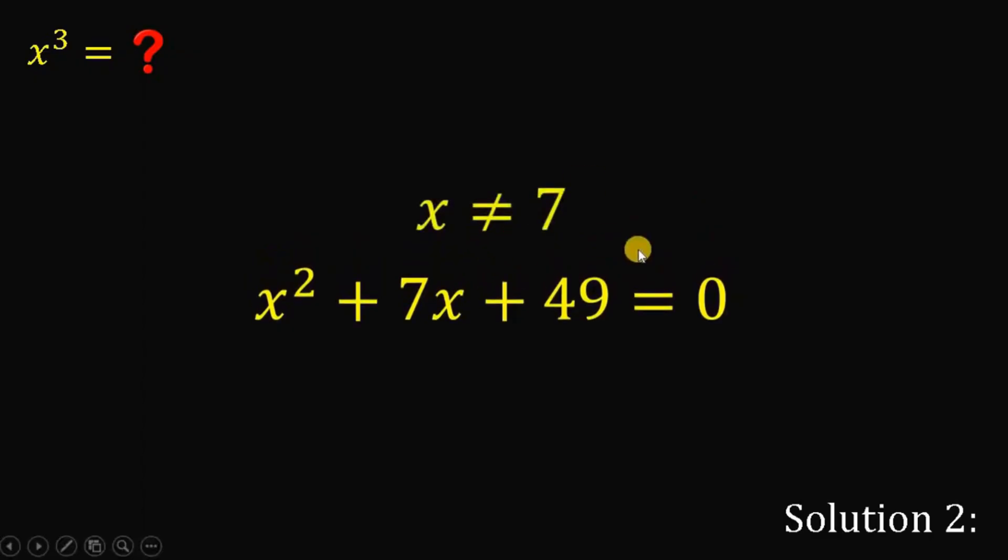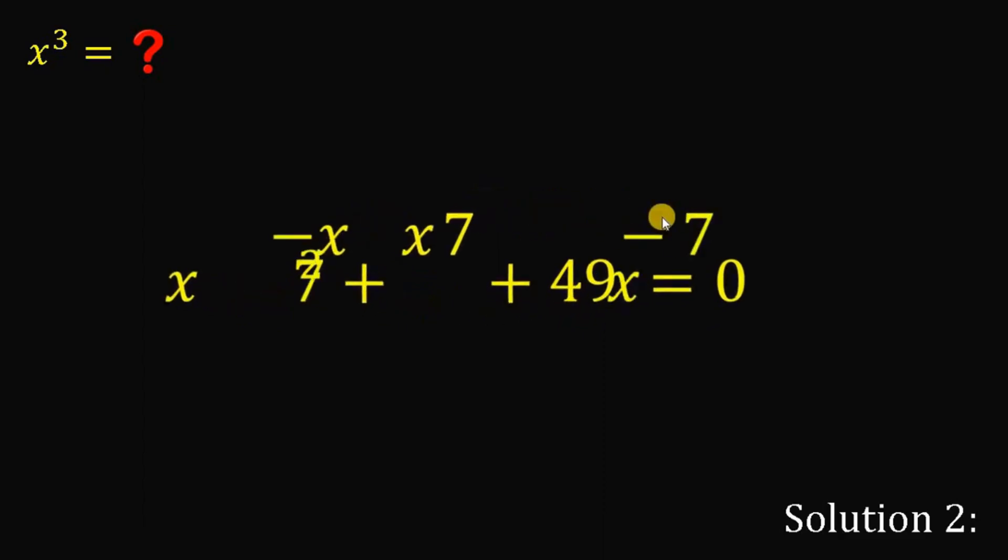x is not equal to 7. Because if we replace x equal to 7, the left-hand side is not equal to 0. So, if x is not equal to 7, x minus 7 is not equal to 0. So, we can multiply both sides by x minus 7, like this.